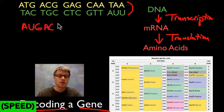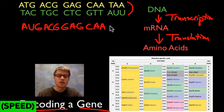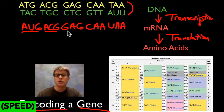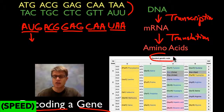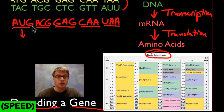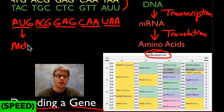Every three letters in the messenger RNA is a codon because it codes for a specific amino acid. To do the actual translation and figure out which amino acids are created, I use a standard genetic code decoder. Looking at the first codon, AUG, I find it in the table — that's methionine, the first amino acid. Methionine is special because it also starts all genes; it's the start sequence. The next codon, ACG, is threonine.